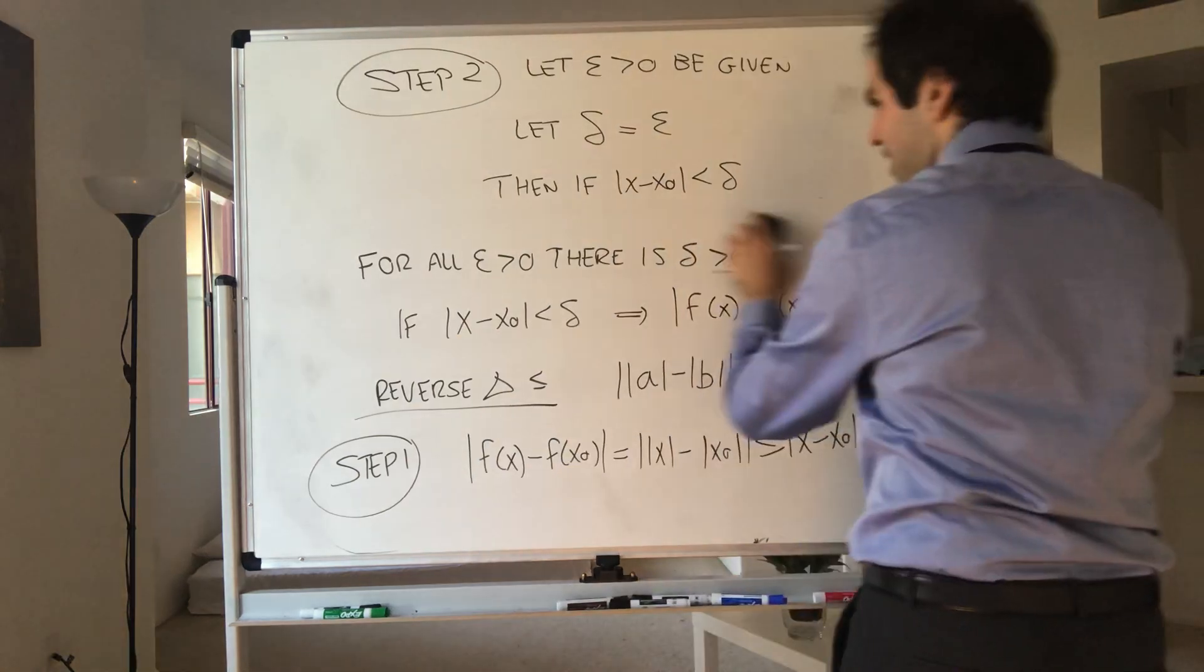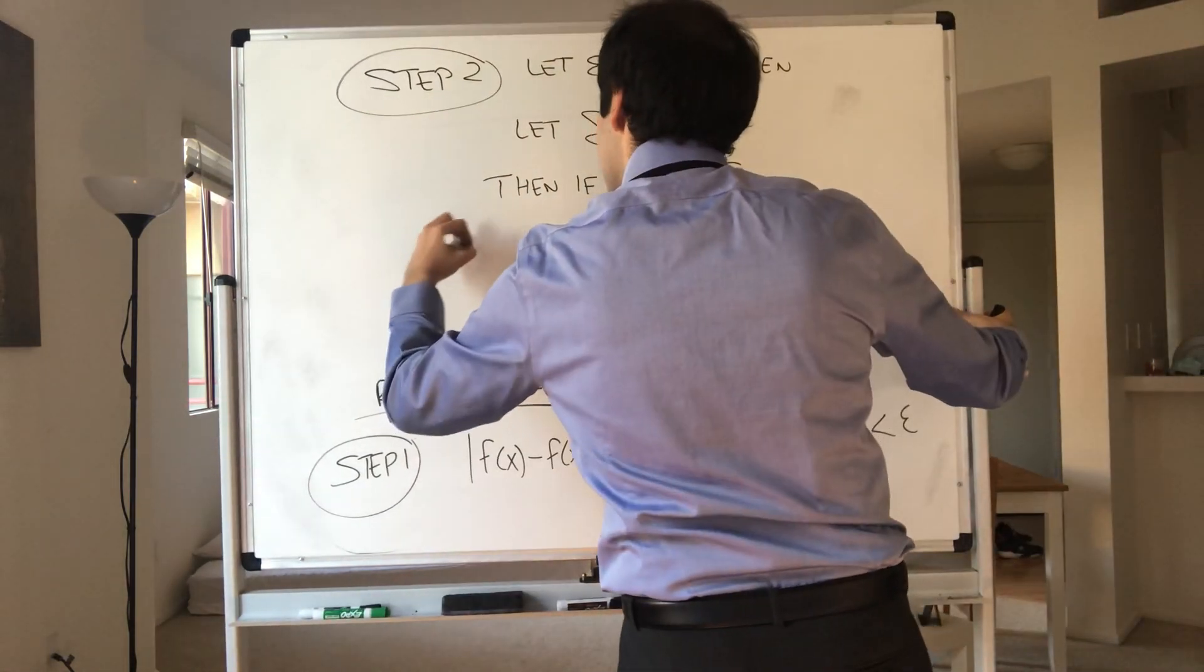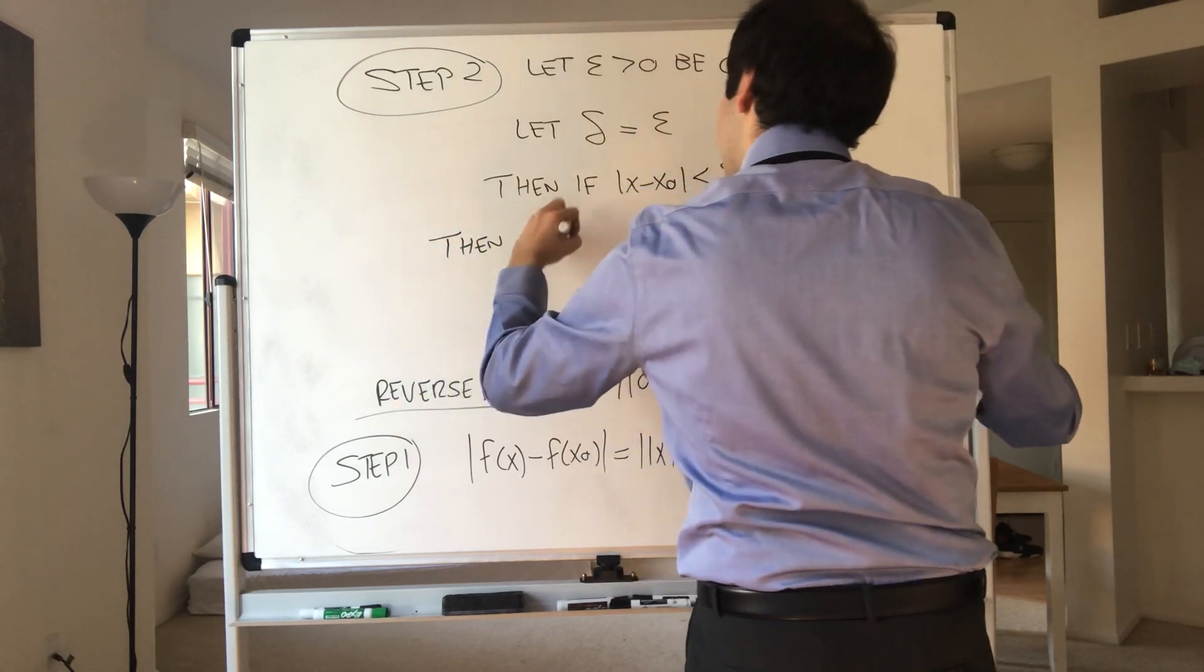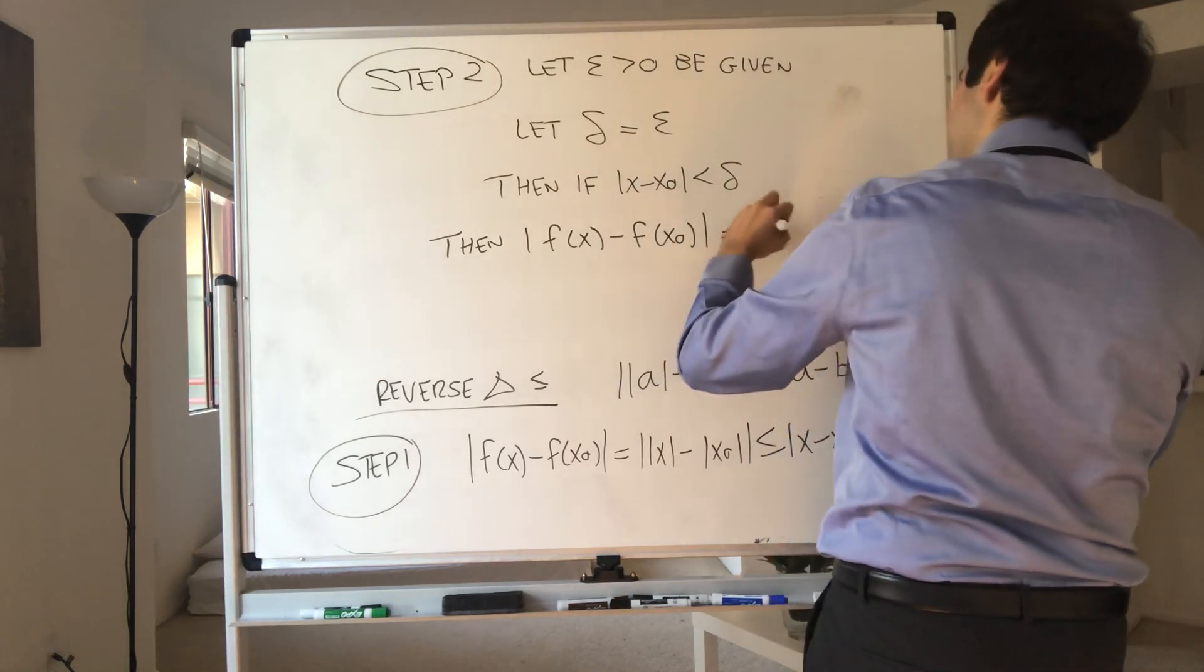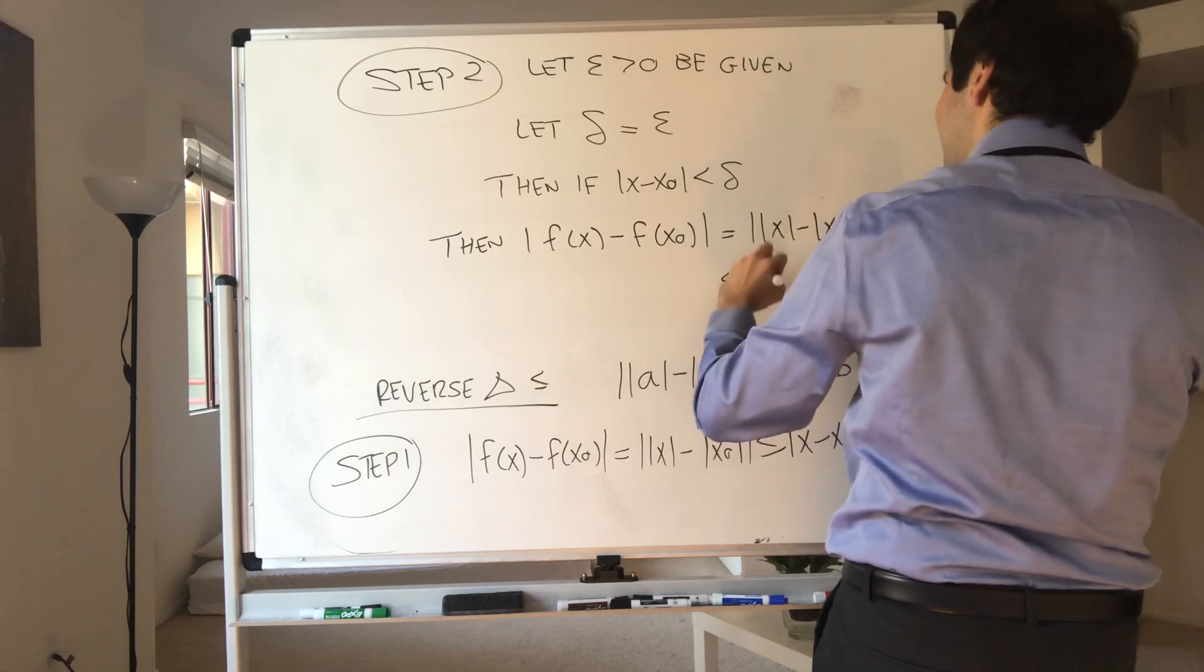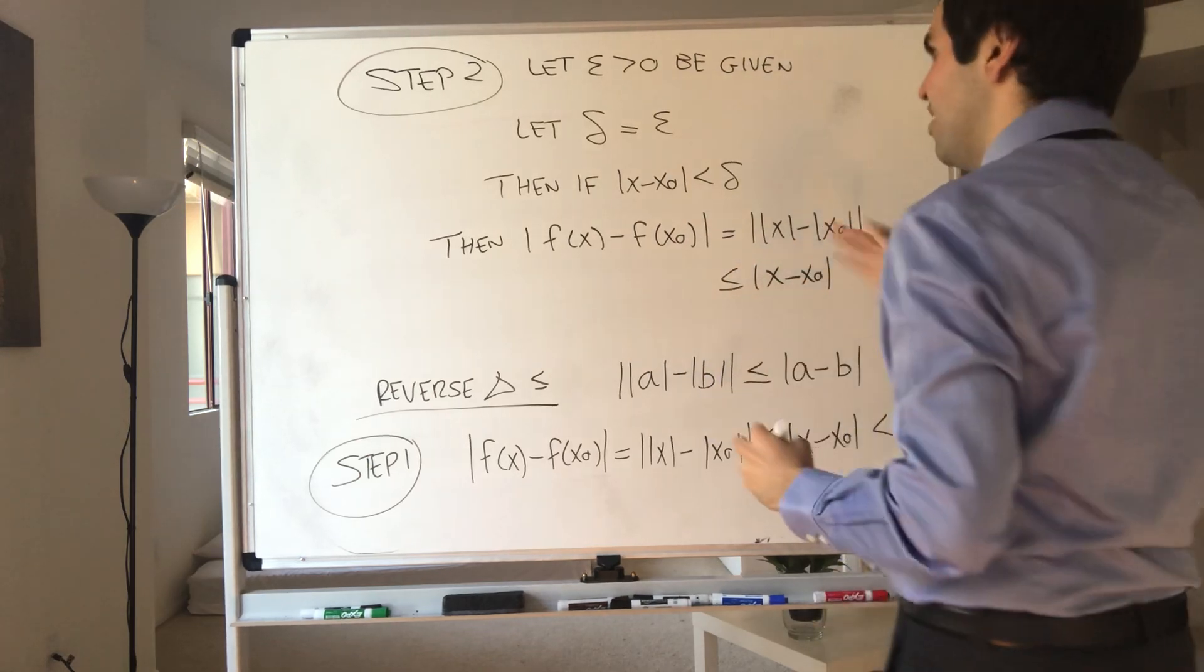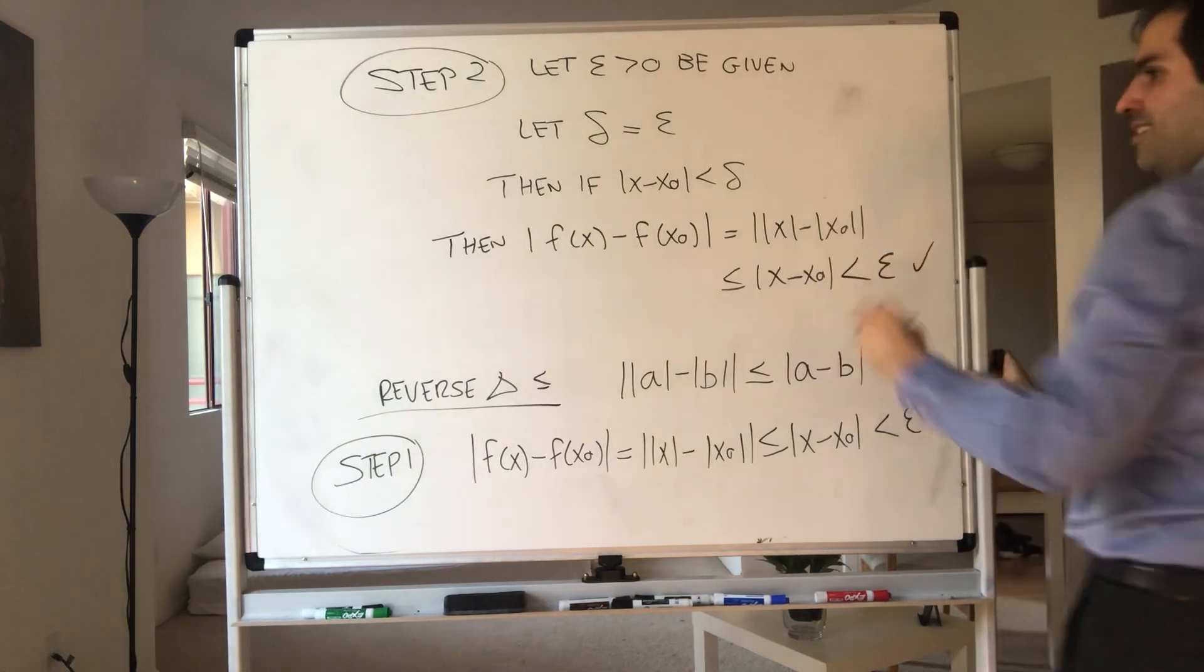then just copy the same line. Then, |f(x) - f(x₀)|, that is, the difference between the absolute values, which is less than or equal to |x - x₀|, which is less than delta, but which is epsilon. And therefore,